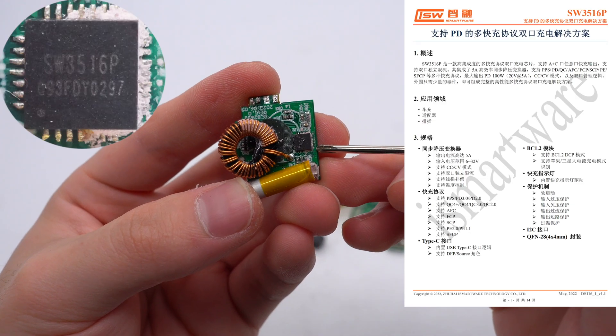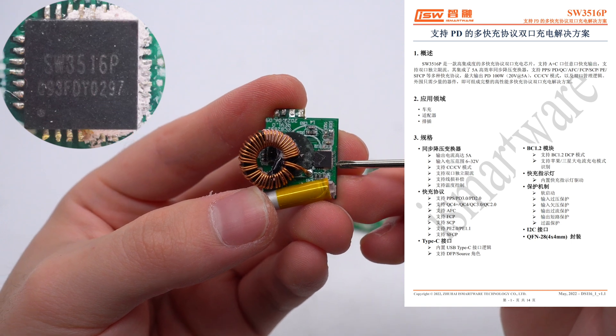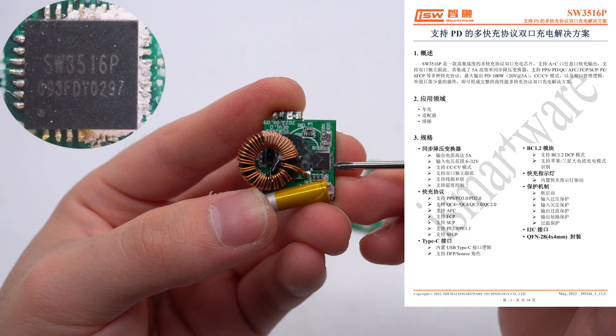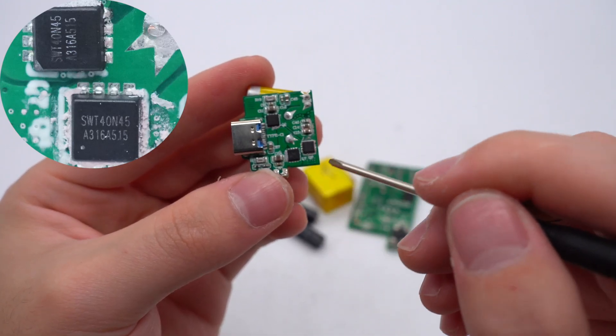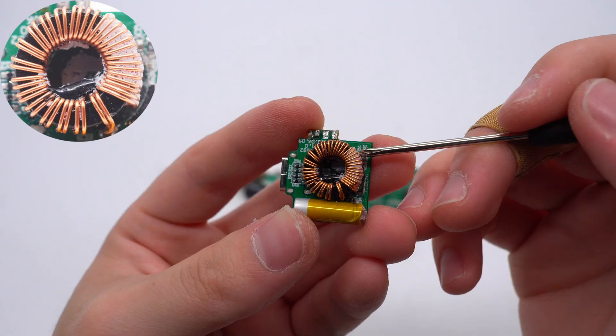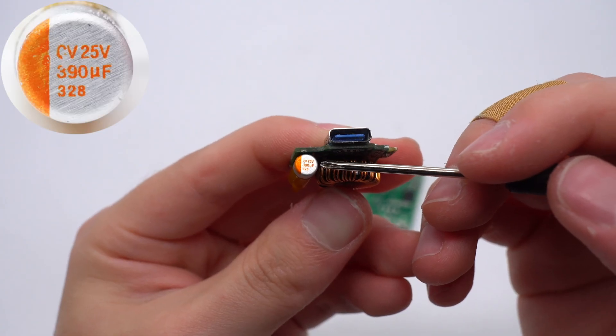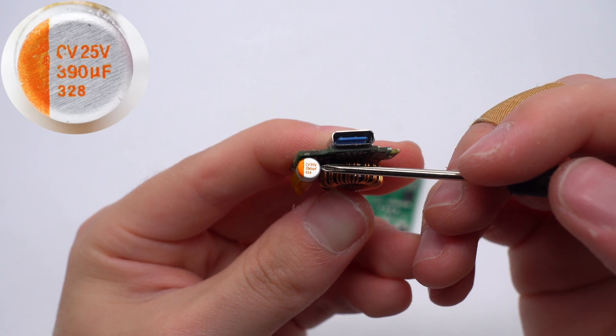The buck controller is from Southchip. It supports charging of one USB-C and USB-A port and dual port independent current limiting. The MOSFETs used for secondary synchronous buck circuit is from Southchip. The buck inductor is wound with wires. The solid capacitor for output filtering is from CHNGCM, 25V, 390μF.